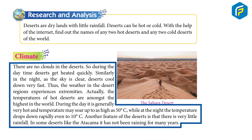Climate: There are no clouds in the desert, so during the daytime, deserts get heated quickly. Similarly, in the night, as the sky is clear, deserts cool down very fast. Thus, the weather in the desert region experiences extremities.